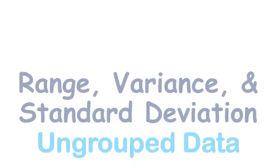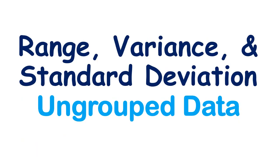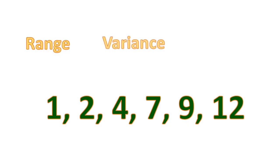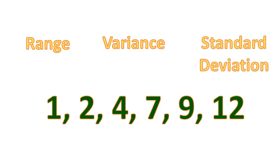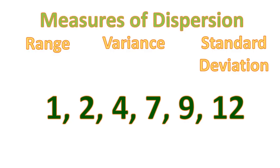In this video, we're going to talk about range, variance, and standard deviation of ungrouped data. We'll use an example set of numbers: 1, 2, 4, 7, 9, and 12. These three — range, variance, and standard deviation — are what we call measures of dispersion, or sometimes measures of variation, because they measure the dispersion or spreadness of the numbers from the center — how wide, spread, or scattered they are.